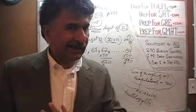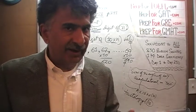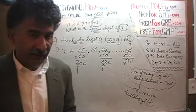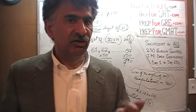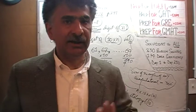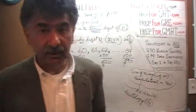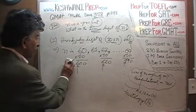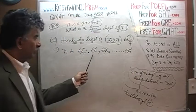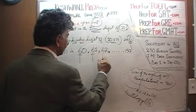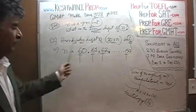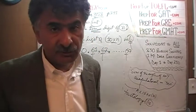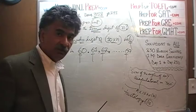N has to be one of those ten values — it cannot be anything else. From our point of view, it doesn't matter what N actually is, because the only thing we want to answer is: what's the tenths digit? Whether N is 60, 61, 62, or 69, in all cases the tenths digit is 6. So do we have enough information from the first statement to answer the question? Yes — the tenths digit of N is 6. The first statement does the job quite nicely.